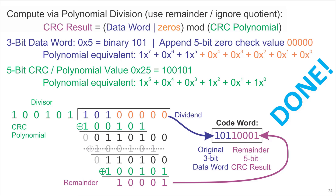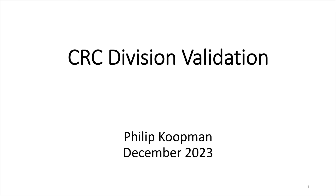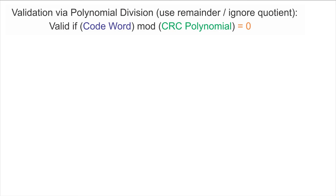Once a cyclic redundancy check value has been computed, it needs to be validated to determine if the code word has retained its integrity. This is also done by a polynomial division — essentially the same computation as used to compute the check value, but with a twist. To validate a code word, one does polynomial division of the code word mod the CRC polynomial, but checks that the result is 0. If the result is 0, it's a valid code word; if not, there's been some corruption.